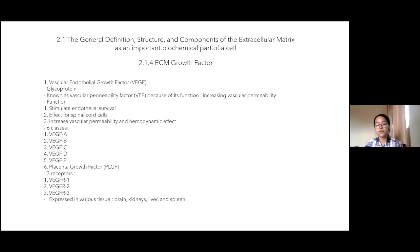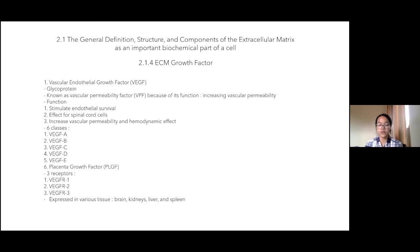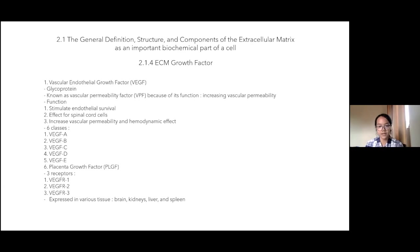Vascular endothelial growth factor is a heparin-binding glycoprotein, also known as vascular permeability factor because of its function to increase vascular permeability. There are six classes of vascular endothelial growth factors, and three kinds of VEGF receptors: VEGFR1, VEGFR2, and VEGFR3. This growth factor has two functions: to stimulate endothelial survival, and to increase vascular permeability and hemodynamic activity.